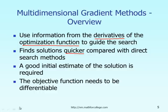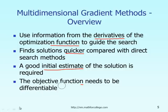In this multidimensional gradient method, we also need to have a good initial guess of the solution. And because the derivative of the objective function is required, we want to make sure that the function is differentiable. Otherwise, we cannot obtain the derivative. That is the general remark about the multi-gradient method.